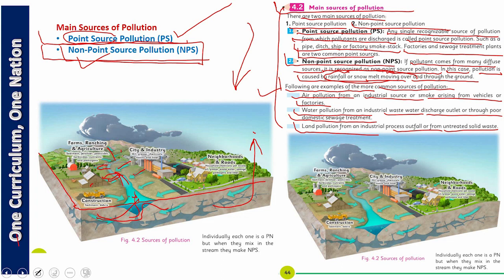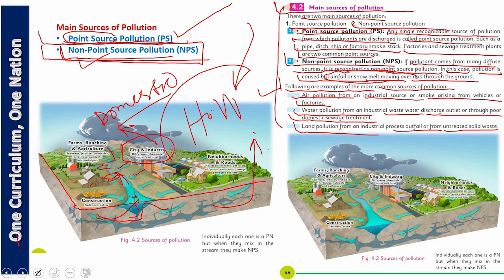Industries should be built far away from domestic areas so that pollutants can be prevented from reaching us. My dear students, you must remember the two main sources of pollution: number one, point source pollution; number two, non-point source pollution. We will discuss the same in detail in the coming classes. Right now, go for your homework — do the related activity in your summer pack. See you in the next class. Best of luck, my dear students. Allah Hafiz.